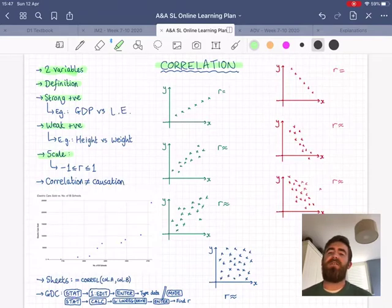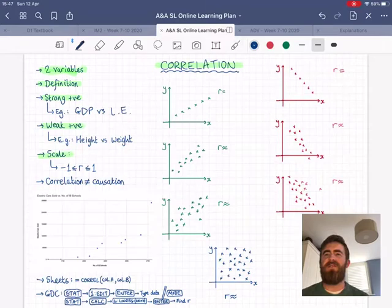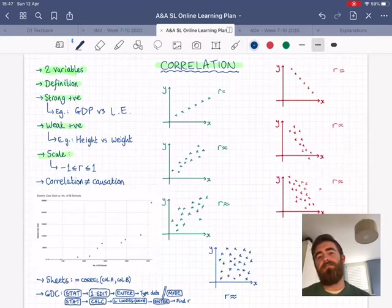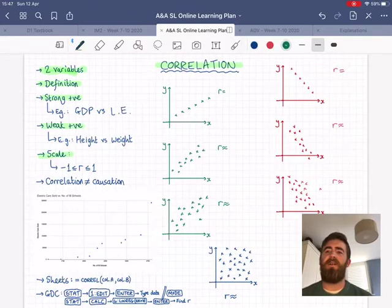So how is it measured? What's the scale here? Well, we use something called a correlation coefficient, and we're going to give it the letter R. And it's going to be measured on a scale from minus one to one. All values of R will fall within that range.